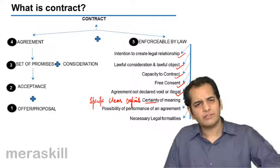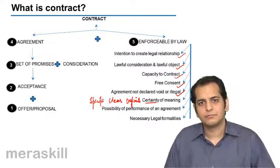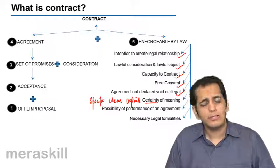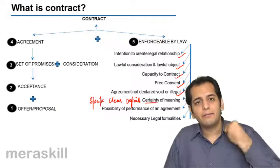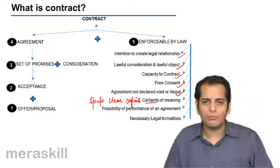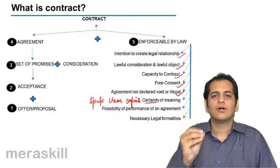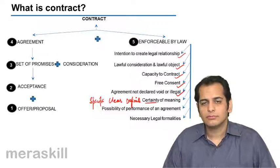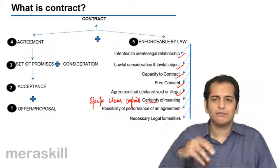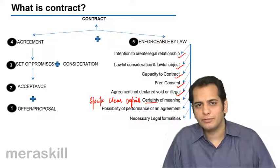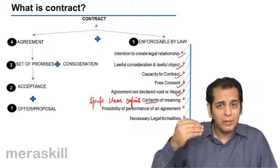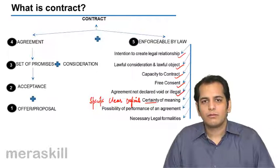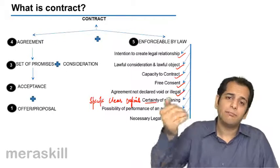The court will never support you because you have made an impossible contract — that contract is bound to get breached and can never be performed. The court says that from the beginning such a contract is void. However, there may be a possibility that when the contract was made it was possible, but later on impossibility crept in.